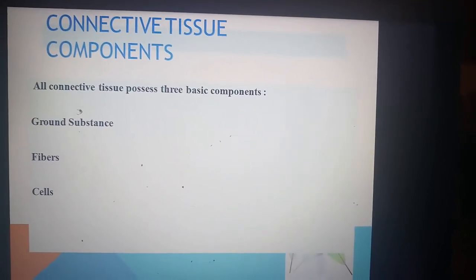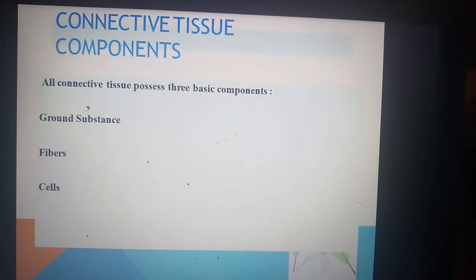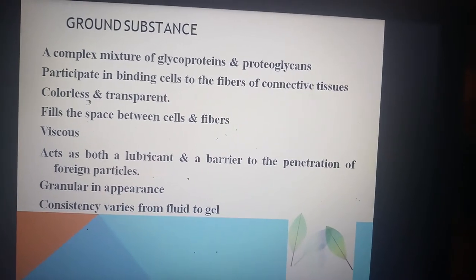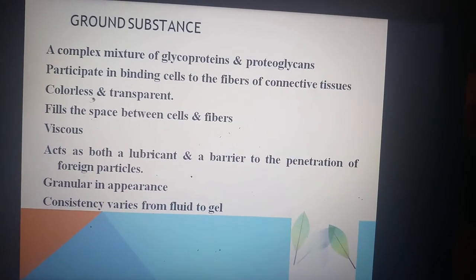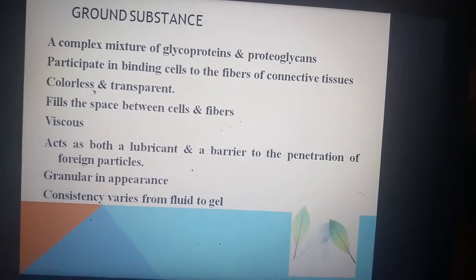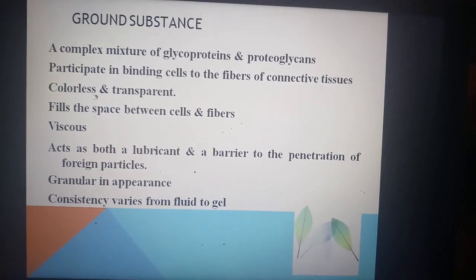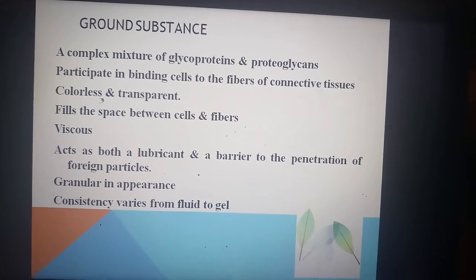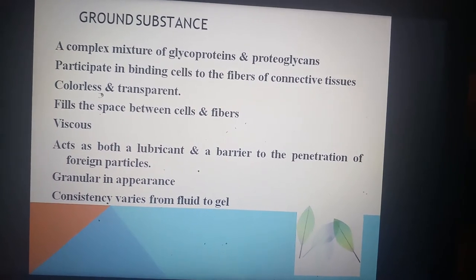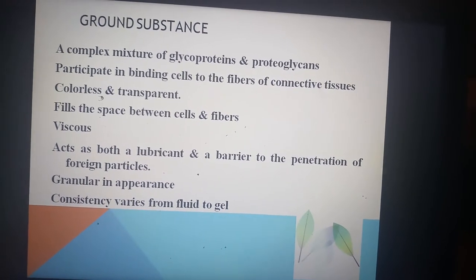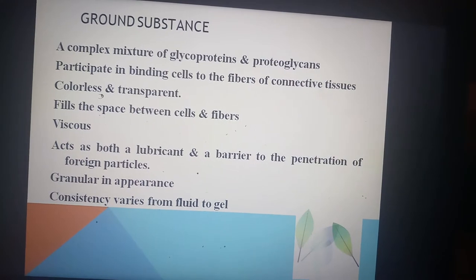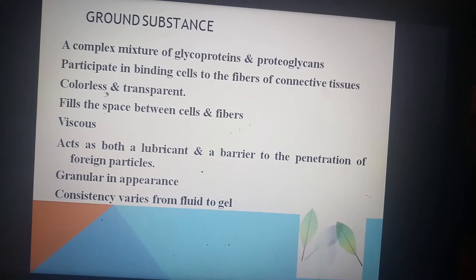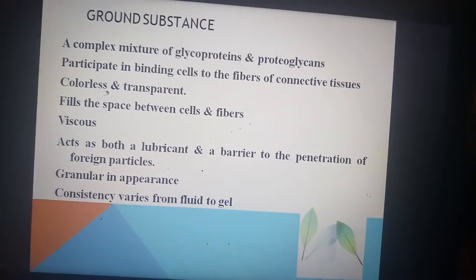The basic components of connective tissue are ground substance, fibers, and cells. Ground substance is a major component — a complex mixture of glycoproteins and proteoglycans. They participate in binding cells to the fibers of the connective tissue. It is colorless and transparent, fills the space between cells and fibers, and its consistency is viscous. It acts as both a lubricant and a barrier to the penetration of foreign particles.